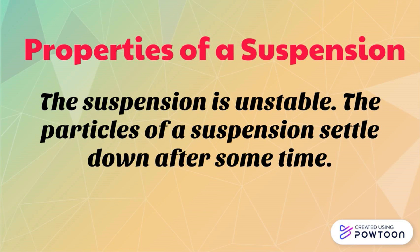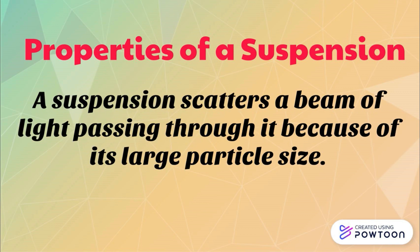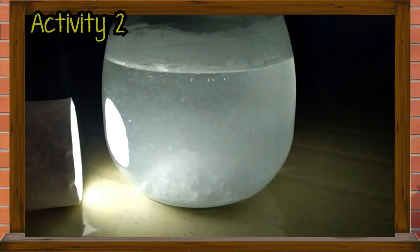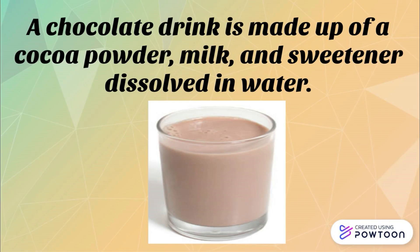The suspension is unstable — the particles settle down after some time. A suspension scatters a beam of light passing through it because of its large particle size. As shown in the illustration, the particles are unstable and the light scatters because of the undissolved chalk powder, unlike in a solution where the light directly passes through the mixture.